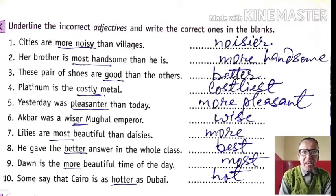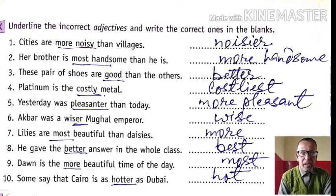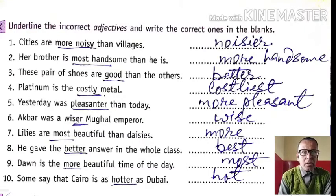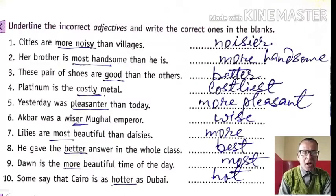Question 1: Cities are more noisy than villages. 'Than' is given, so comparative form will be used. The comparative of noisy is 'noisier', so 'more noisy' is incorrect — it should be 'noisier'. Question 2: Her brother is most handsome than he is. Again 'than' is used, so it should be comparative: 'more handsome'. Question 3: These pair of shoes are good than the others. 'Good' is not proper here — it should be 'better than the others'.